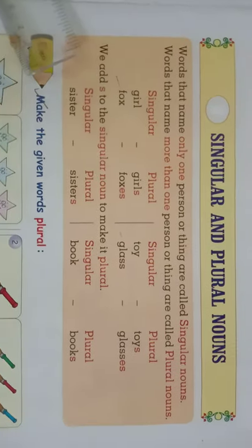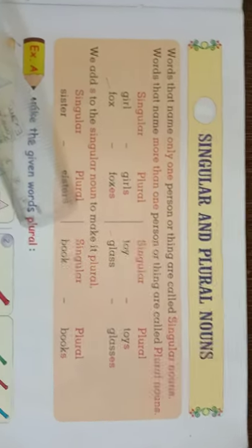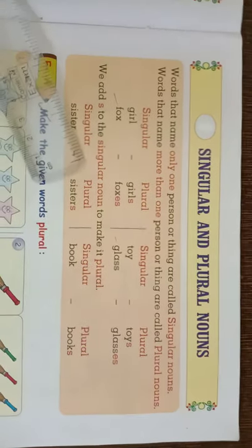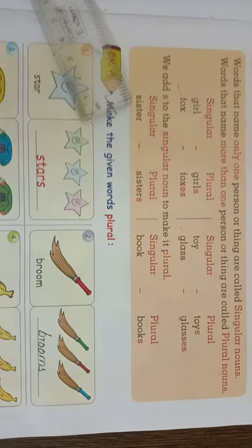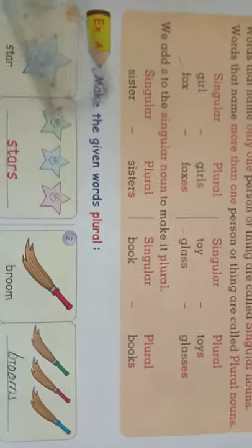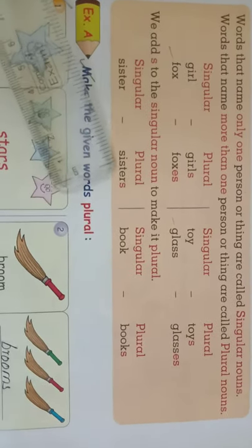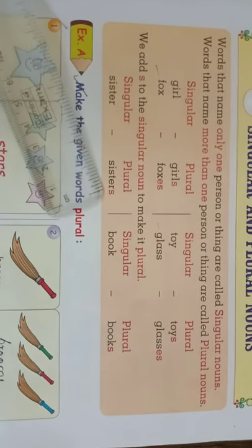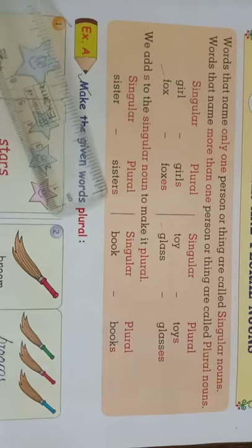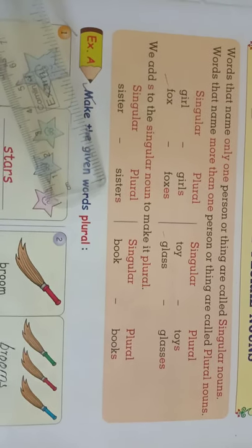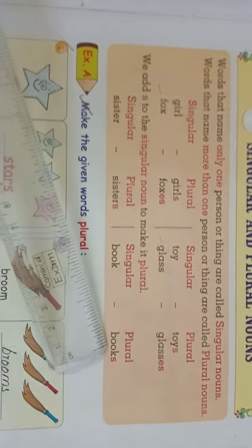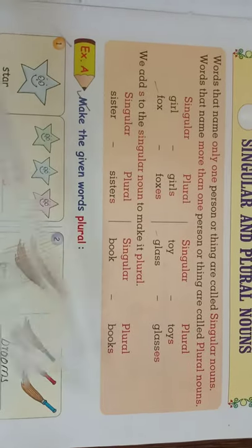We add 's' to the singular noun to make it plural. Singular means one, plural means many. For example, 'sister' means one sister. In the plural form it becomes 'sisters' — when we add 's' to sister, it turns into plural, meaning many. I have one sister, she has many sisters. Likewise, I have a book, you have many books. This is singular and plural.